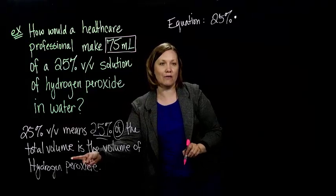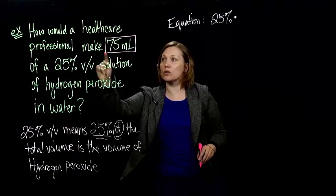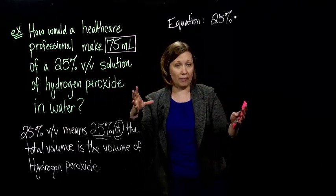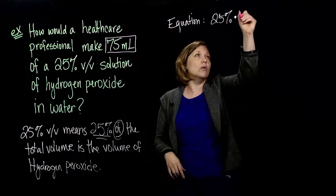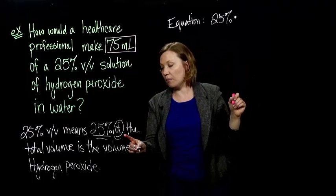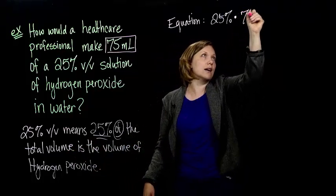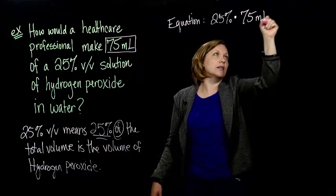Yeah, it's this 75 milliliters that I've boxed, because that's what we're trying to make. That's the total volume that we want to have in the end. So 'of' means times, so we're going to multiply by the total volume, which is our 75 milliliters.